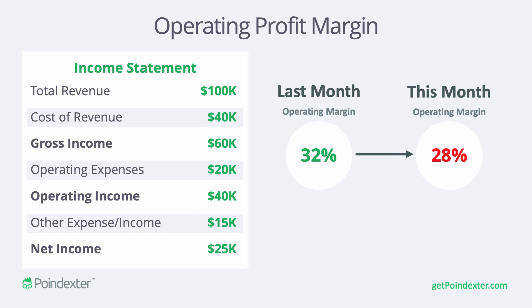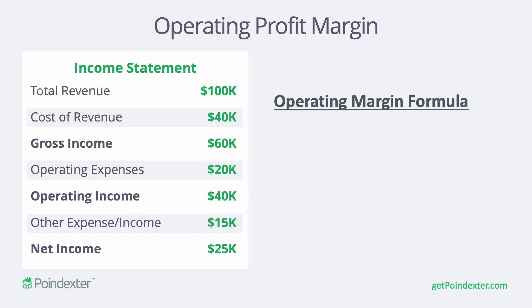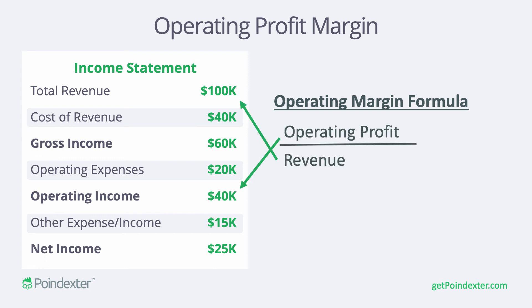We can calculate operating profit margin by taking operating profit and dividing it by revenue, and that gives us operating margin — which is just another term for operating profit margin. This was operating profit and operating profit margin in 90 seconds.